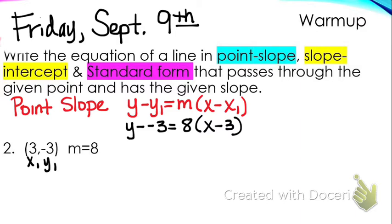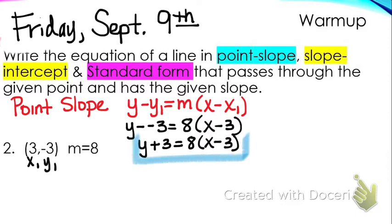So what's the one thing that we need to do? This is your final equation. This would be your final equation — this is point-slope.